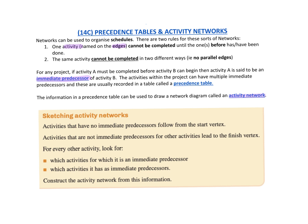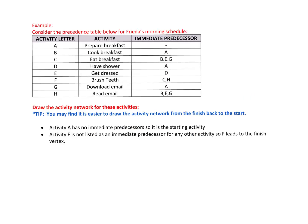When sketching activity networks, activities that have no immediate predecessors follow from the start vertex. For example, getting the bread is the start, and putting it in the toaster is the first activity. Activities that are not immediate predecessors for others lead into the finish vertex. For every other activity, look for what their immediate predecessors are and then construct the network accordingly.